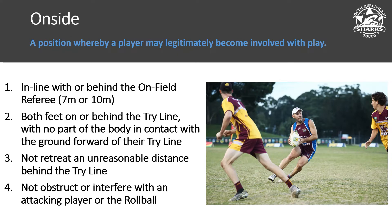Remember, best outcomes of the game is what we're all about. Ensure that there is not an obstruction or interference with an attacking player or the roll ball. Where that mark would be: if there is a penalty from an infringement in the touch prior to the roll ball, the mark is where the ball is. If the ball has rolled and then there's obstruction or interference, the penalty is an offside penalty and needs to come forward to the seven metre mark.